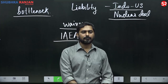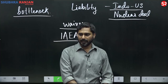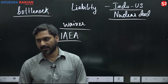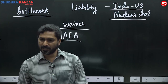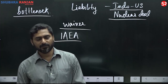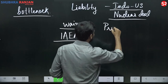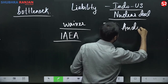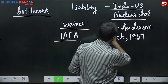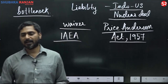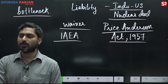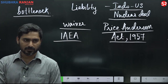In the USA, vendors and suppliers are protected from any liability under the Price-Anderson Act of 1957. Under this act, the liability falls only on the operator.